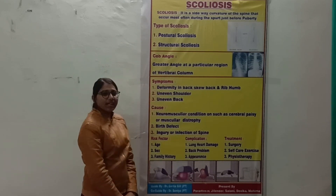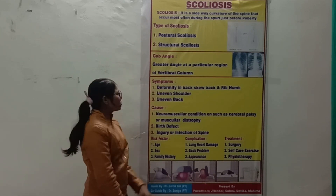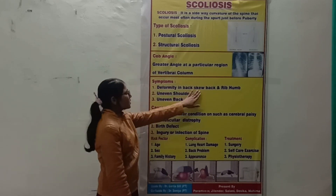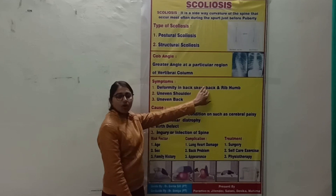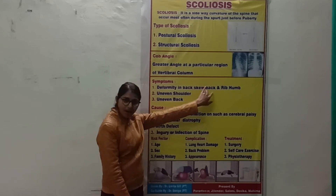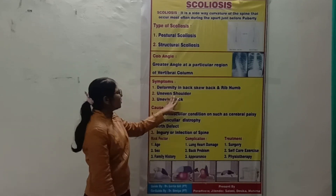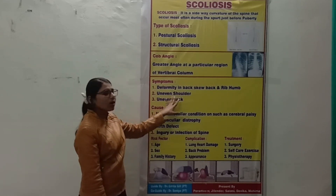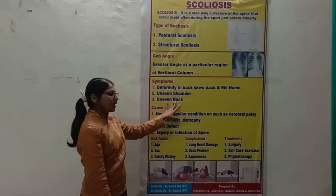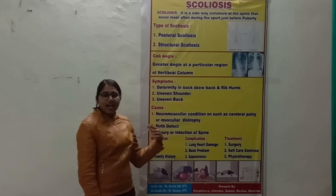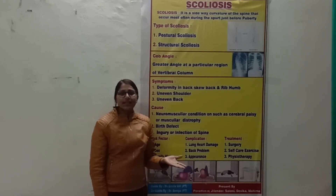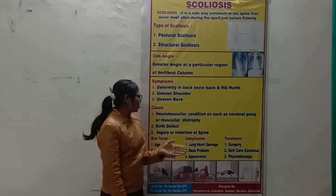The first symptom is deformity in the back, such as a stiff back or a rib hump. The second is uneven shoulders or an uneven back. There are several factors that lead to uneven shoulders or back.